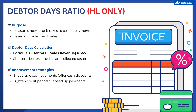The debtor days ratio is calculated by debtors divided by sales revenue times 365, and the unit here is days. So make sure you don't just write the number — like 27.28 — but that you write 27.28 days, otherwise you will lose a mark. The shorter the debtor days ratio, the better for the business, as it means they have more quickly collected on their debts from customers.